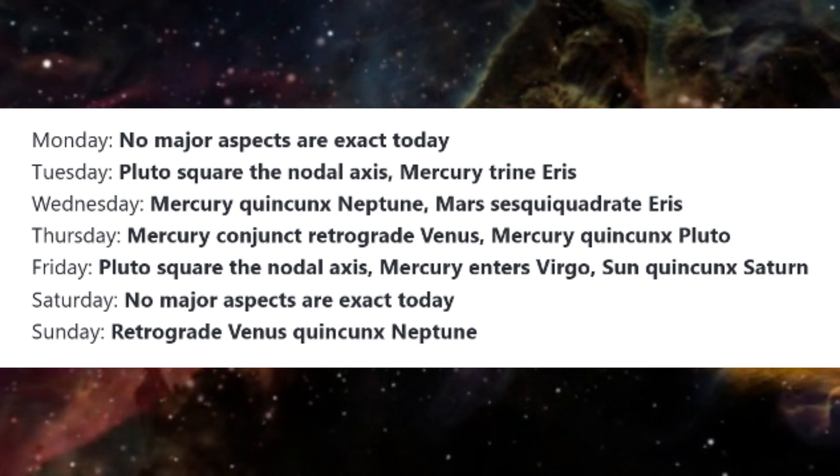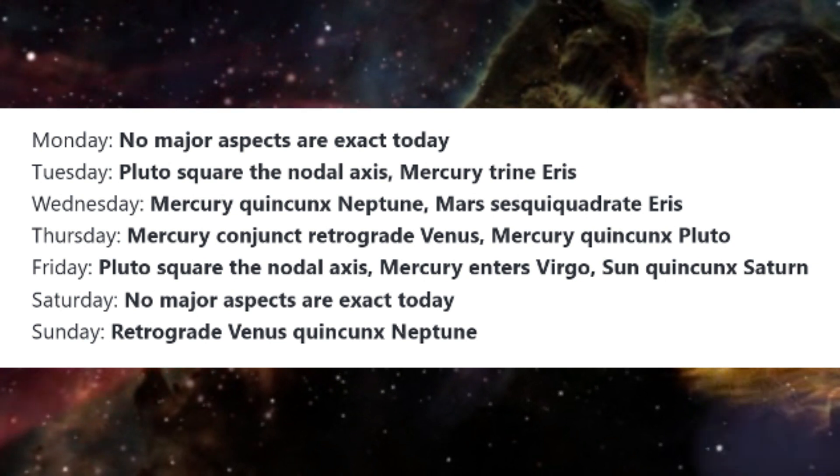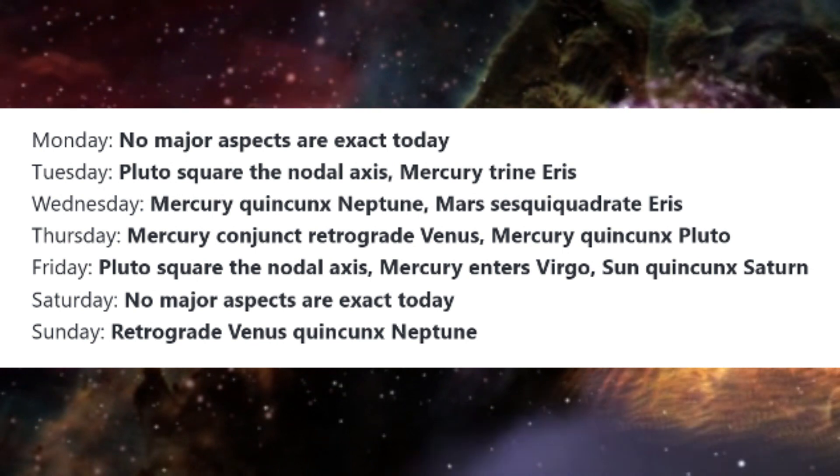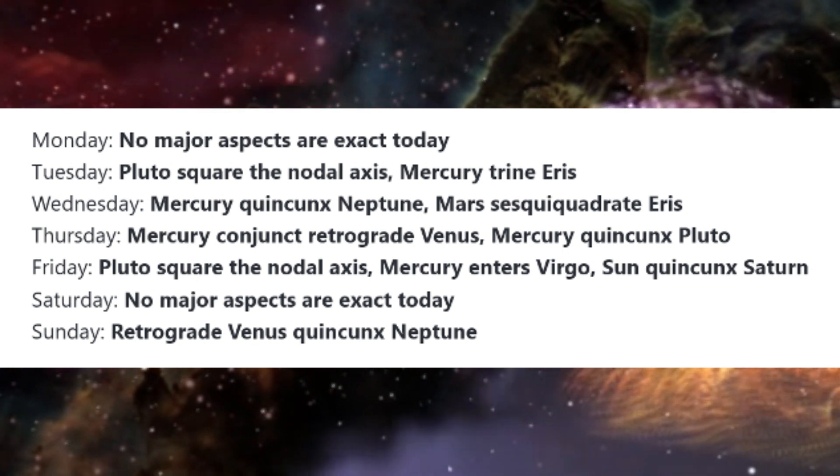Mercury in Virgo's mental precision can be beneficial, of course, but we must also watch a tendency to be controlling, to demand perfection and efficiency, or to be pessimistic and critical.